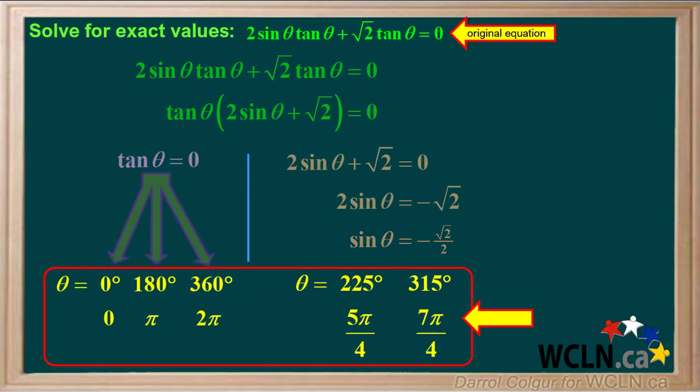To summarize, these five values for angle theta will solve this equation exactly. Again, a good way to check your answer would be to insert each of these five angles in for theta on the left side of the original equation and see if you get 0 for an answer.